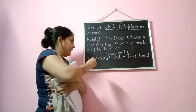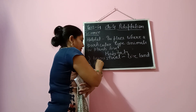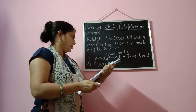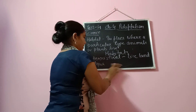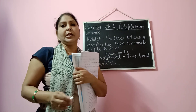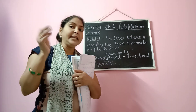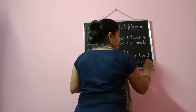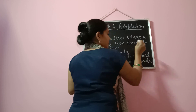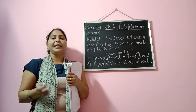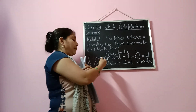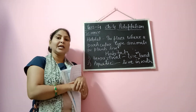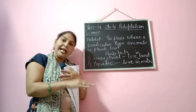Then we have the second type of habitat — that is aquatic habitat. With the word you can understand: aquatic habitat means the animals which live in water. The third type of animals, on the basis of their habitat, are called amphibians. Amphibians are those animals which can live both on land as well as in water.